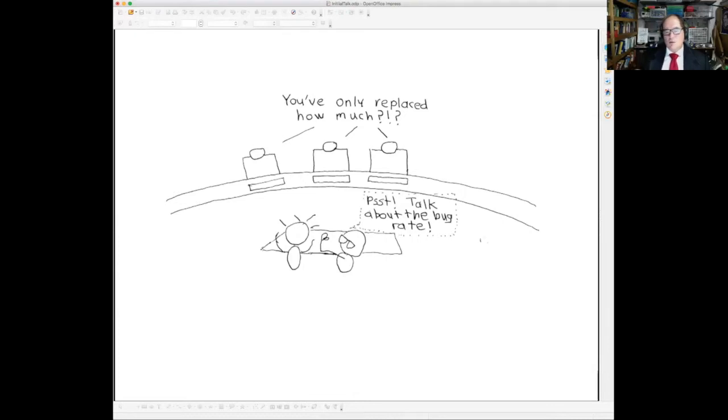And so Congress, even though they had refused her request for a hundred million dollars to rewrite the system that she was in charge of, called her up and said, how can it be that you have only replaced 10% of this system in the last five years? And that was a very difficult question for Terry to answer.